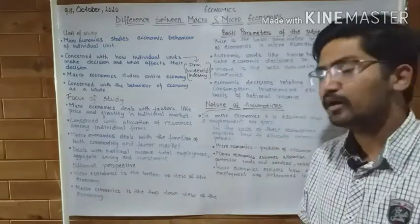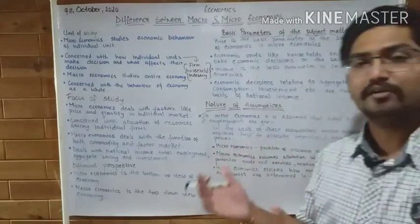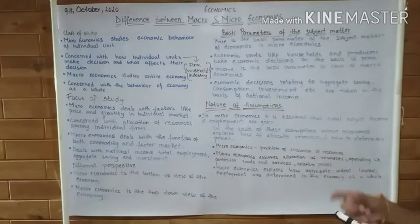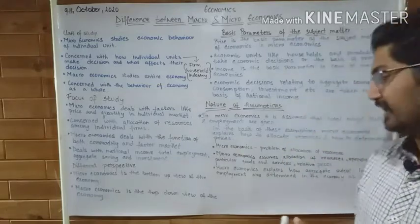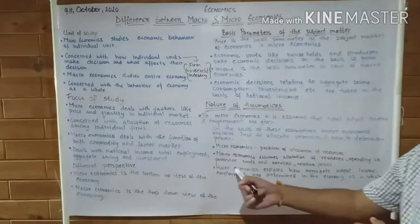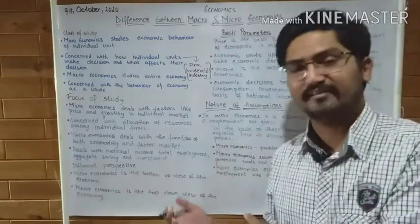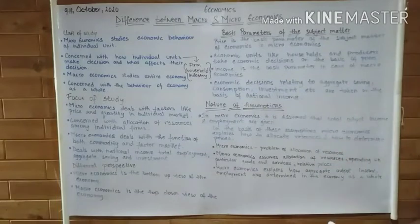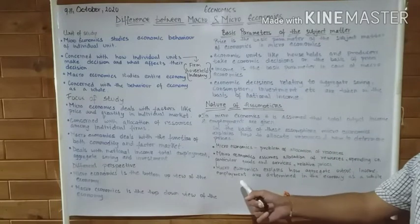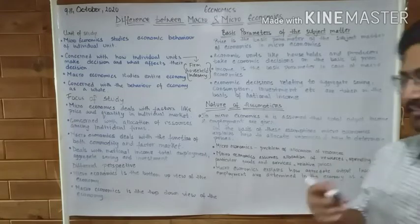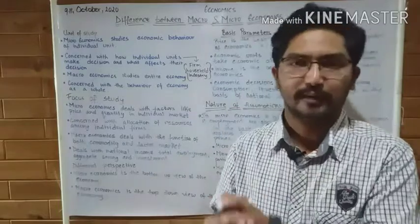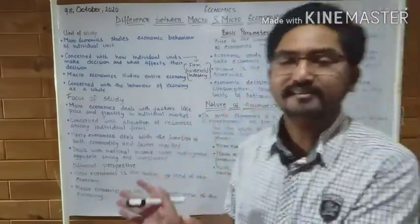On the other hand, in macroeconomics we assume things such as how resources have been allocated, spending on particular goods and services, and relative prices. Based on these assumptions, we find out and explain aggregate output, income, employment, and other things that are to be determined in our economy.